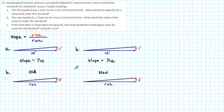Part C. If the front door is 3 feet above the ground, how long would the handicapped ramp be using the old standard?